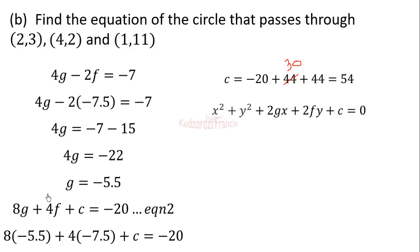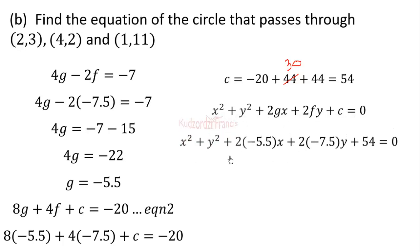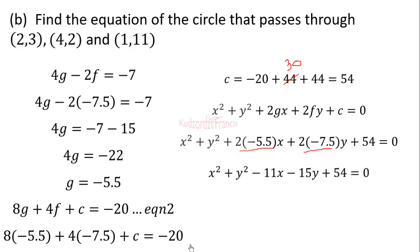Substituting g equals negative 5.5, f equals negative 7.5, and c equals 54 into the general circle equation, and simplifying — 2g gives negative 11 and 2f gives negative 15 — the equation of the circle is x squared plus y squared minus 11x minus 15y plus 54 equals zero.